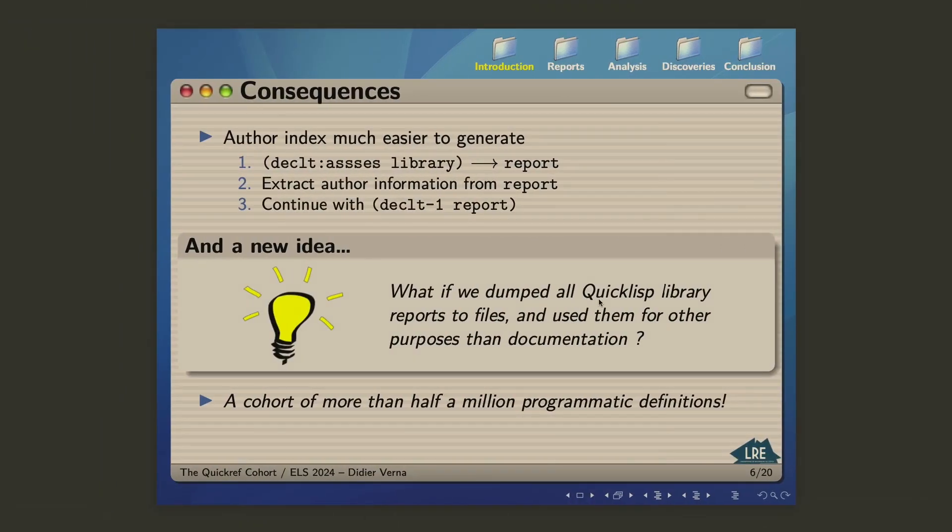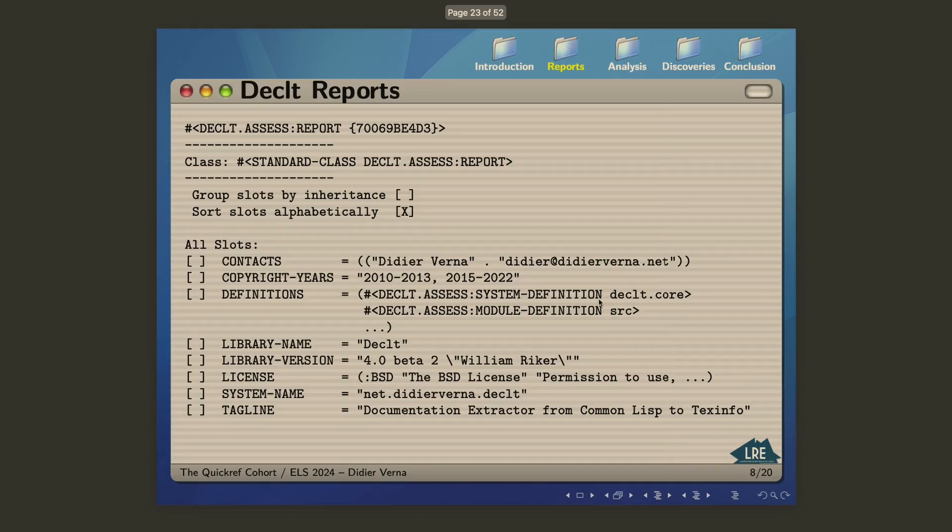What is the general shape of a DECLET report? So it's essentially a data structure which contains a number of information extracted, basically, and primarily from the ASDF system definitions. What is of a specific interest for us here is the definitions slots here, which contains a list of programmatic definitions abstracted in a specific way. So that's where you find the list of methods, classes, and all that stuff for every ASDF system there is in QuickLisp.